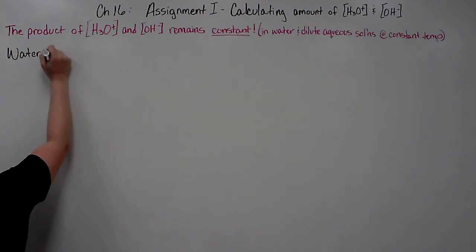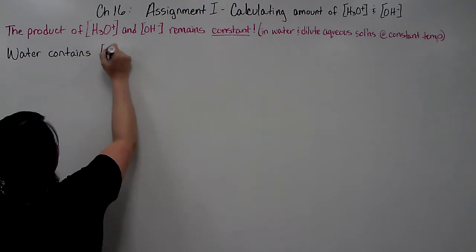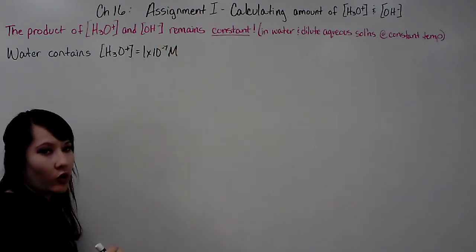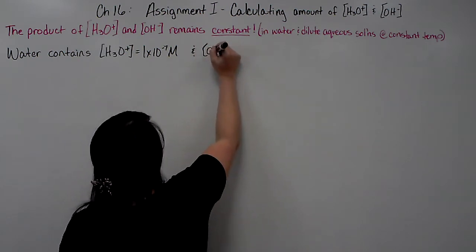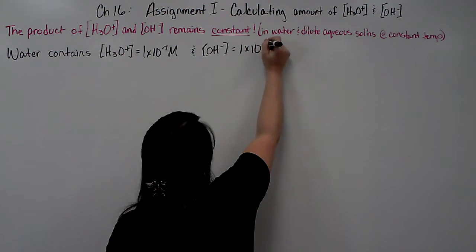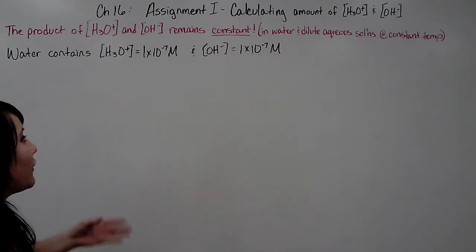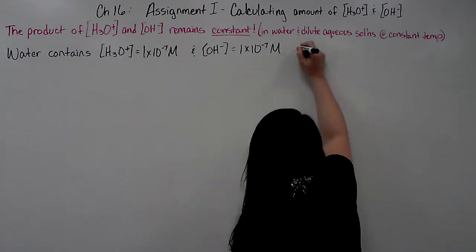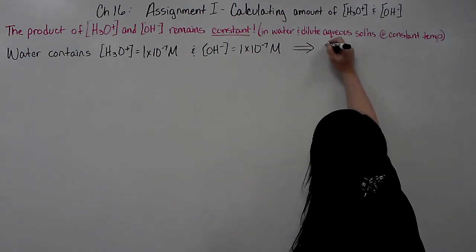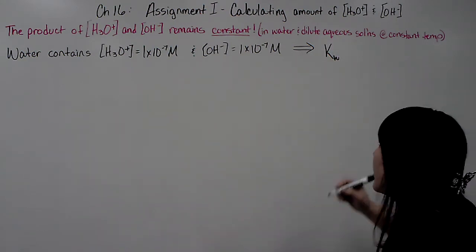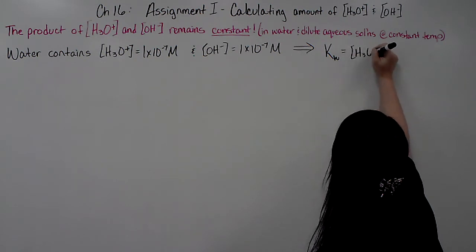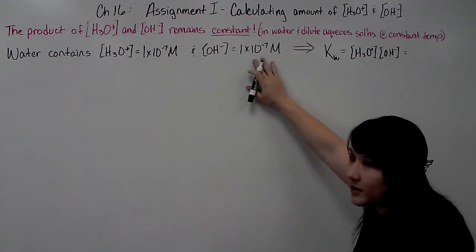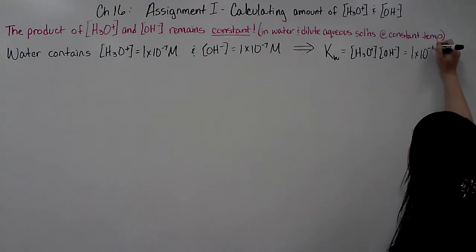Water contains both hydronium and hydroxide in a certain amount. It contains 1×10⁻⁷ molar hydronium ions. Because water is neutral, it also contains an equal amount of hydroxide ions: 1×10⁻⁷ molar. If you multiply the hydronium and hydroxide concentrations together, you get the constant. Multiplying 1×10⁻⁷ by 1×10⁻⁷ gives 1×10⁻¹⁴.